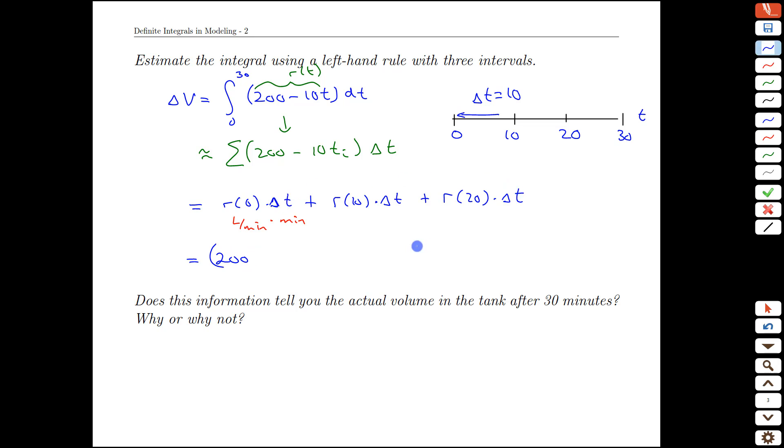I'm going to take this delta T and move it to the end. So we don't have to keep multiplying by it. And we'll just have the rate values inside these parentheses. What was the rate after 10 minutes? Well, it's 200 minus 10 times 10 is 100. So 200 minus 100 is still positive 100.